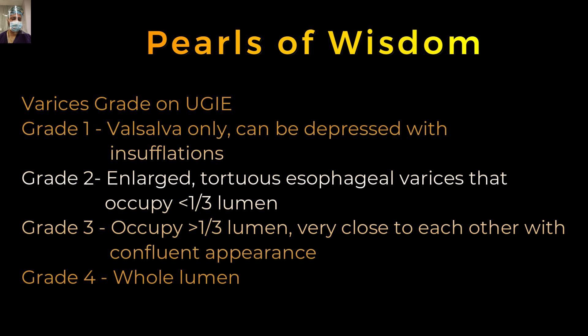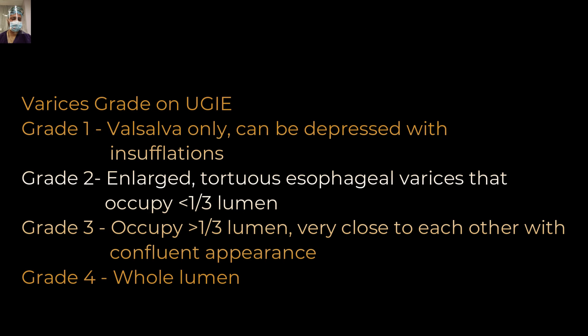This child had grade three varices. Grade one varices are visible only on Valsalva maneuver and can be depressed with air pressure. Grade two — tortuous esophageal varices occupying less than one-third of the lumen. Grade three — occupying more than one-third with a confluent appearance. Grade four — varices filling the whole lumen.